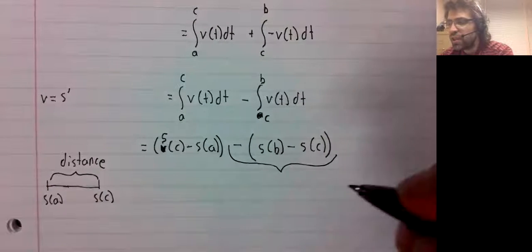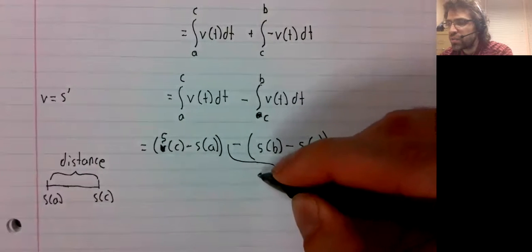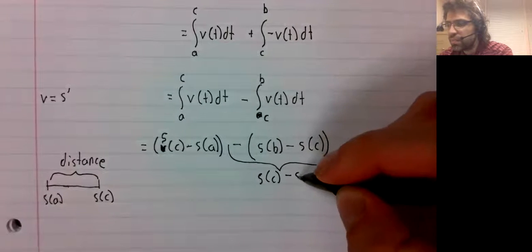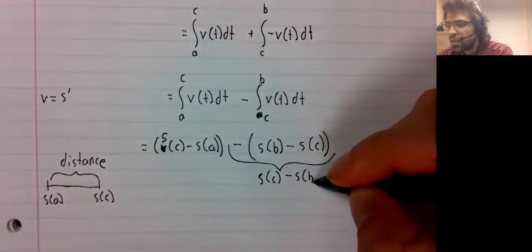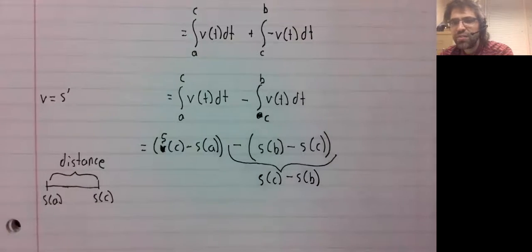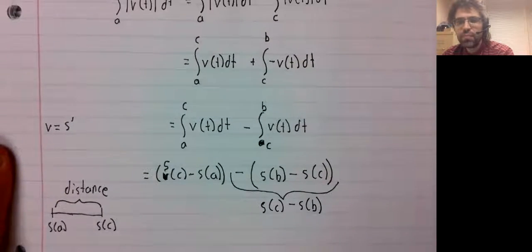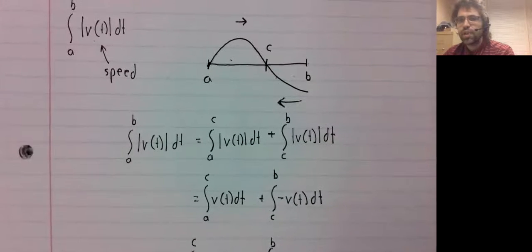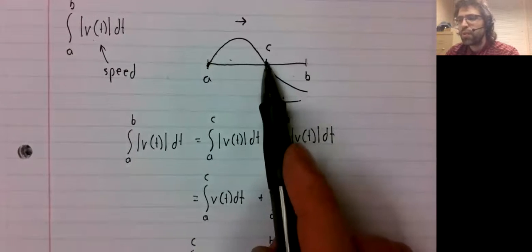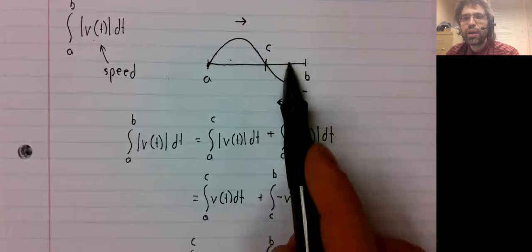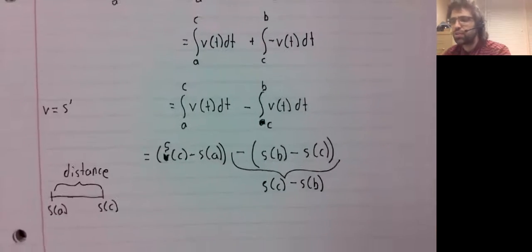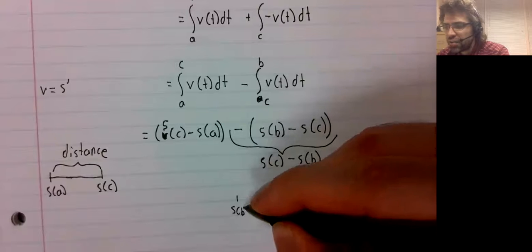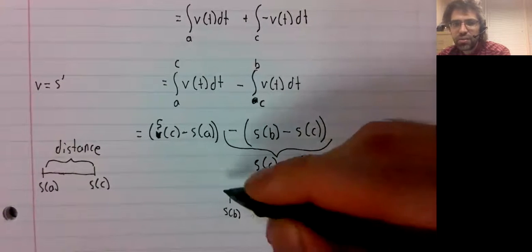This we can rewrite as S of C minus S of B. And remember, from C to B we're moving to the left. So S of B is here.